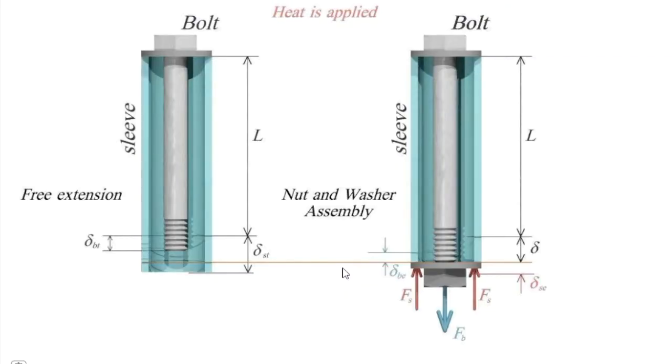Now let's get back to the element that is restrained. In that case, we see that sleeve is getting shorter by this amount. Delta s e is the deformation in sleeve caused by force and delta b e is deformation in the bolt caused by the force.